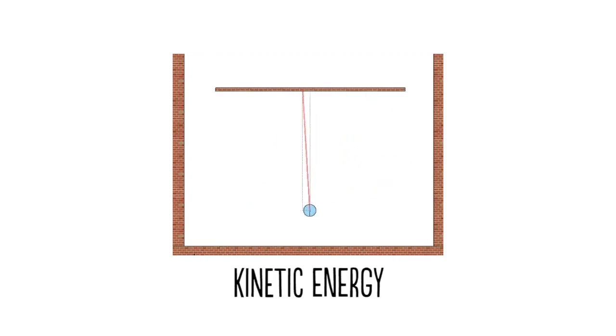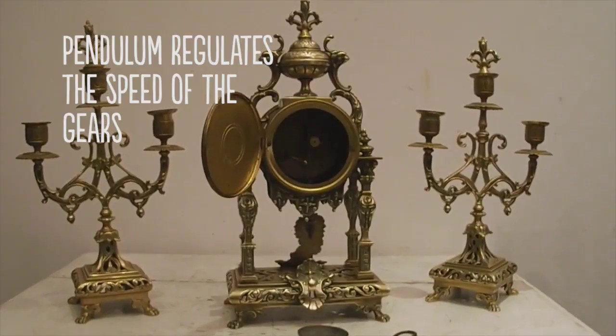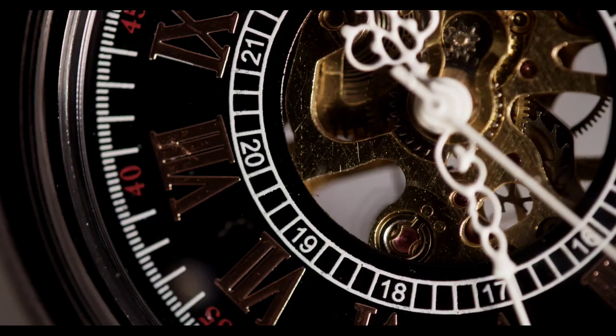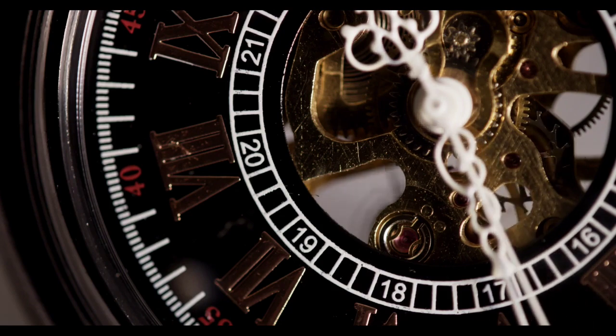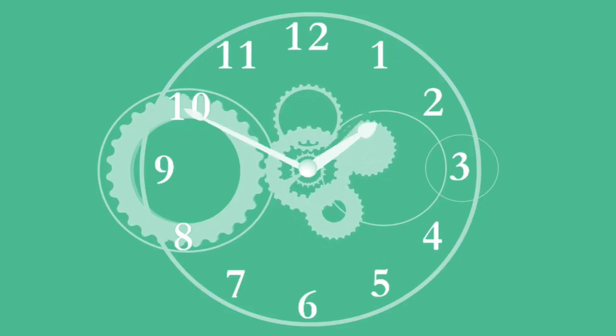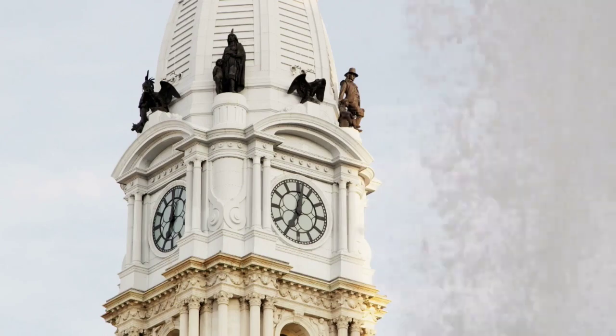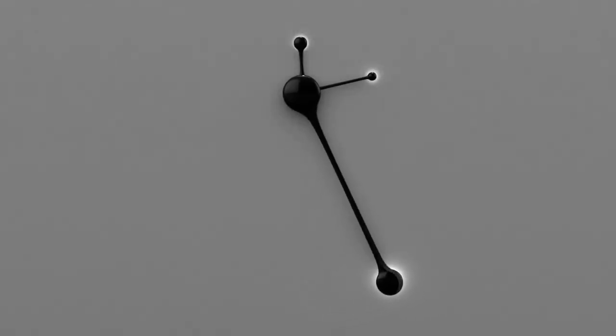In a clock, the pendulum's job is to regulate the speed of the gears. These gears are the interlocking wheels found inside the clock. The gears count the number of seconds that pass and convert these into minutes and hours, displayed on the clock.